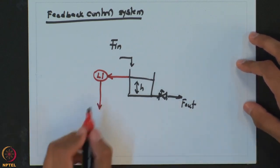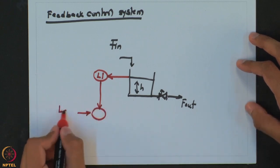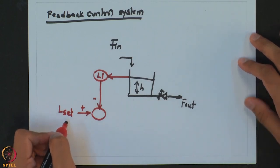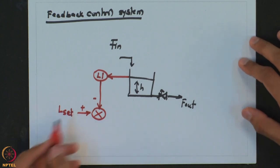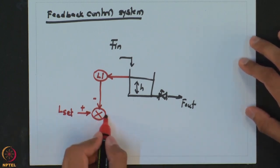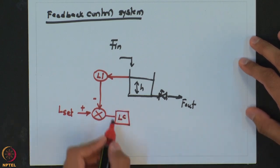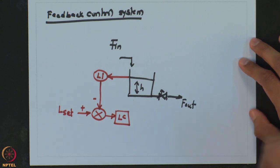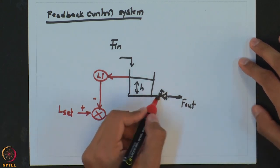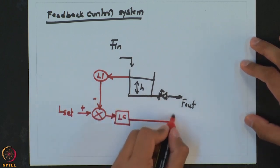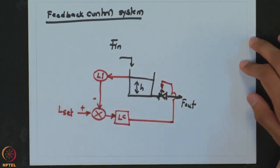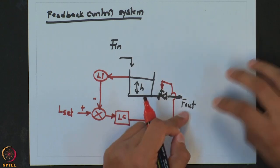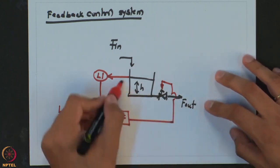When we talk about the feedback control system, the first step is to measure the controlled variable — in this case the level. A level indicator takes the current value of the level and converts it into an electrical signal to drive the controller. That current level value is then compared with the desired value, called L-set, and we take the error — the difference between the desired and current values — which is fed to the controller.